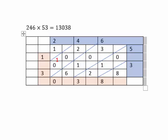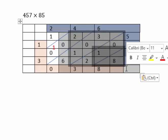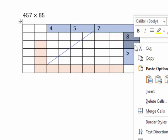Any questions? Do you want me to do one more problem? Raise your hand if you'd like one more lattice multiplication problem. Okay, somebody has their hand up. Let's do 457 times 85. So tell me what numbers to put on the top row. DJ says: 4, 5, and 7. And on the side: 8 and 5.